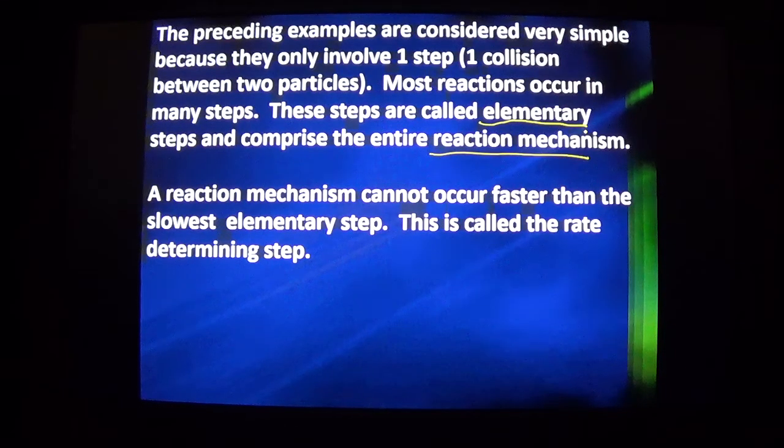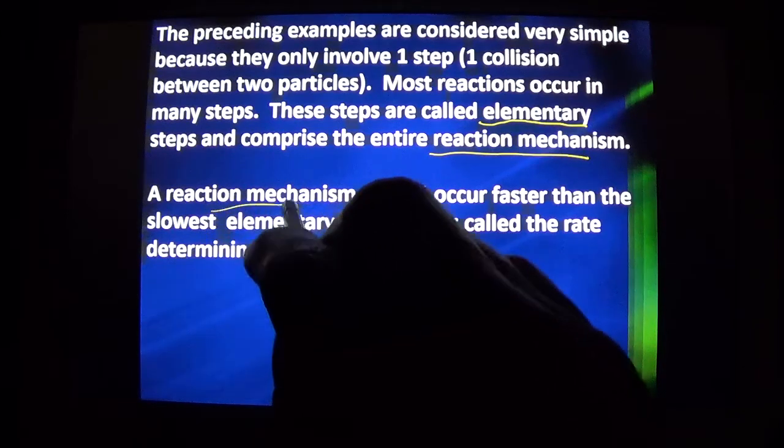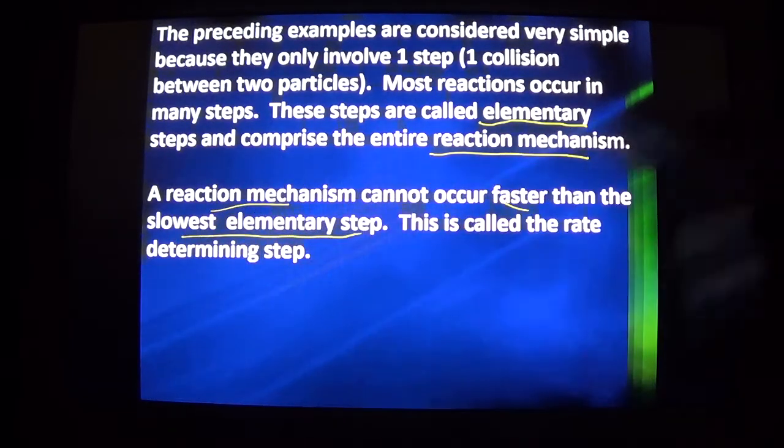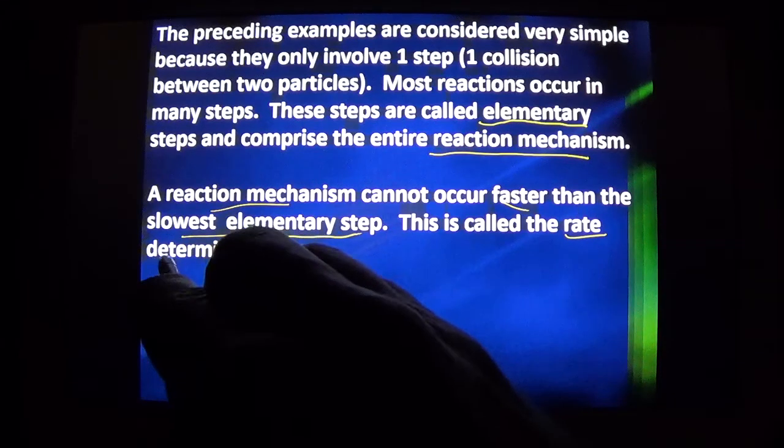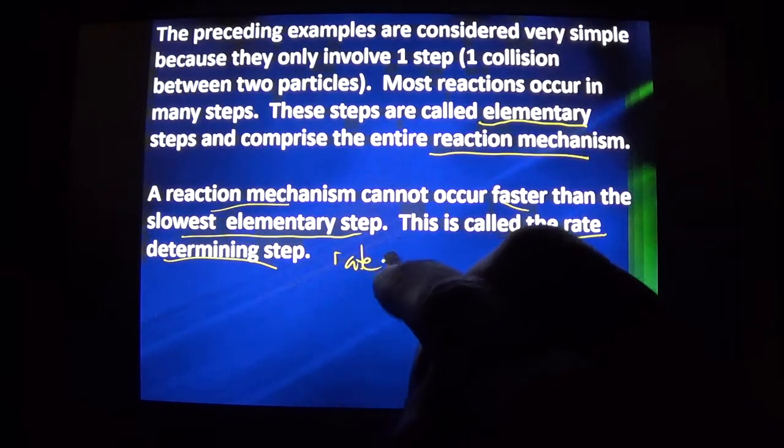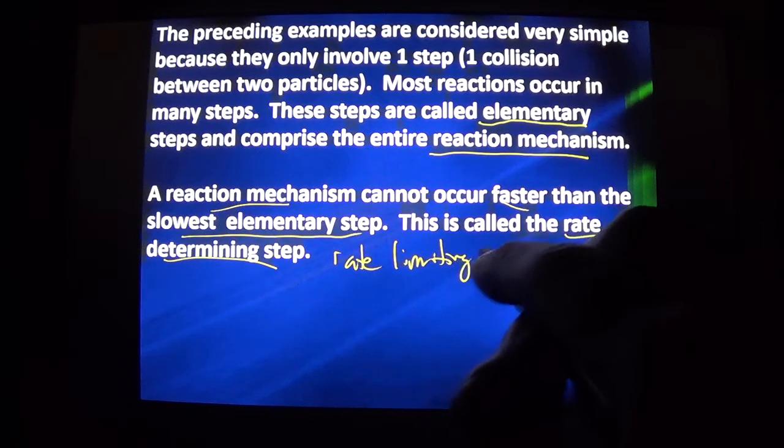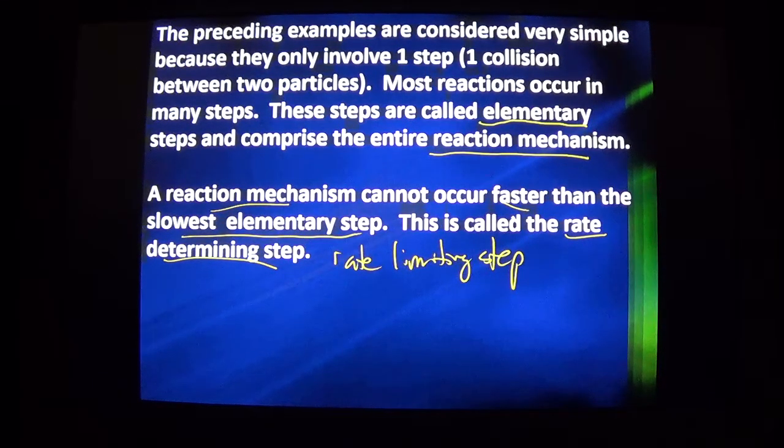We have the saying that a chain is only as strong as its weakest link. In kinetics, our saying is that a reaction mechanism is only as fast as the slowest elementary step. Knowing which step is the slowest is key to knowing the speed of the overall reaction. We call that the rate determining step or the rate limiting step.